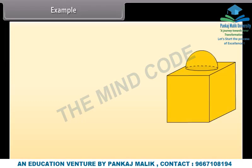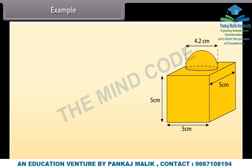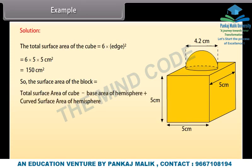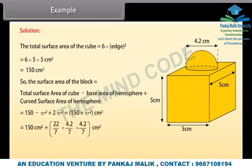Example: This decorative block is made of two solids — a cube and a hemisphere. The base of the block is a cube with edge 5 cm and the hemisphere fixed on the top has a diameter of 4.2 cm. Find the total surface area of the block. Solution: Total surface area of the cube = 6 × edge² = 6 × 5 × 5 = 150 cm². The part of the cube where the hemisphere is attached is not included. So surface area of the block = total surface area of cube − base area of hemisphere + curved surface area of hemisphere = 163.86 cm².